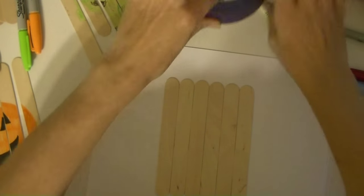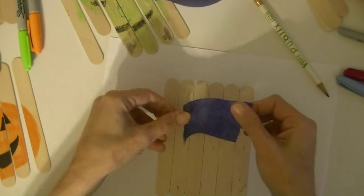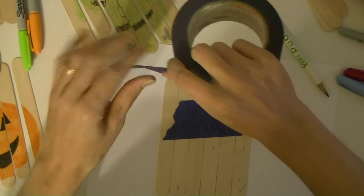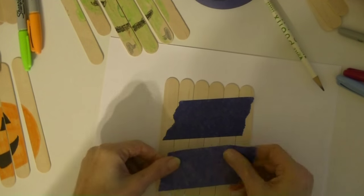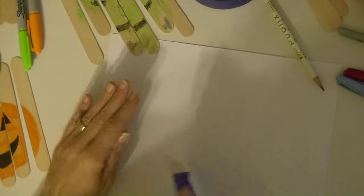Then just take another popsicle stick to make sure they're straight and there's no gaps in them. Okay. Then just take some tape. You can use masking tape, painters tape. All this is going to do is hold it together while the little one colors on it. Okay. Now flip them over and color.